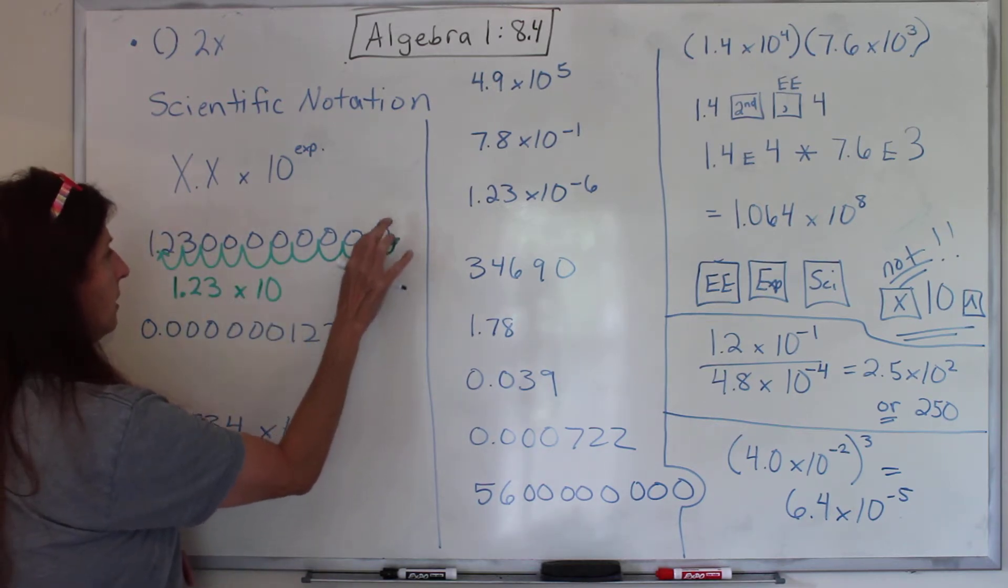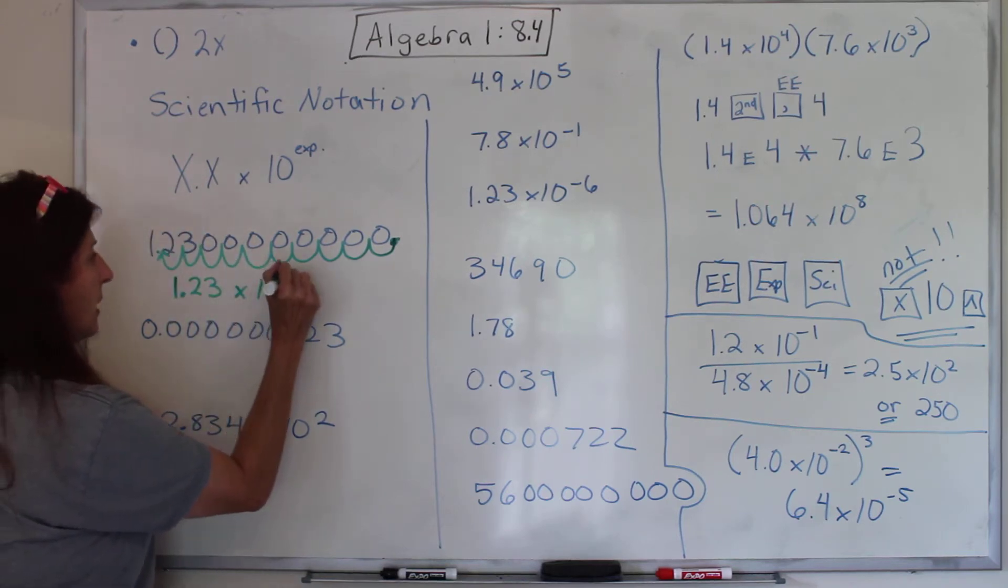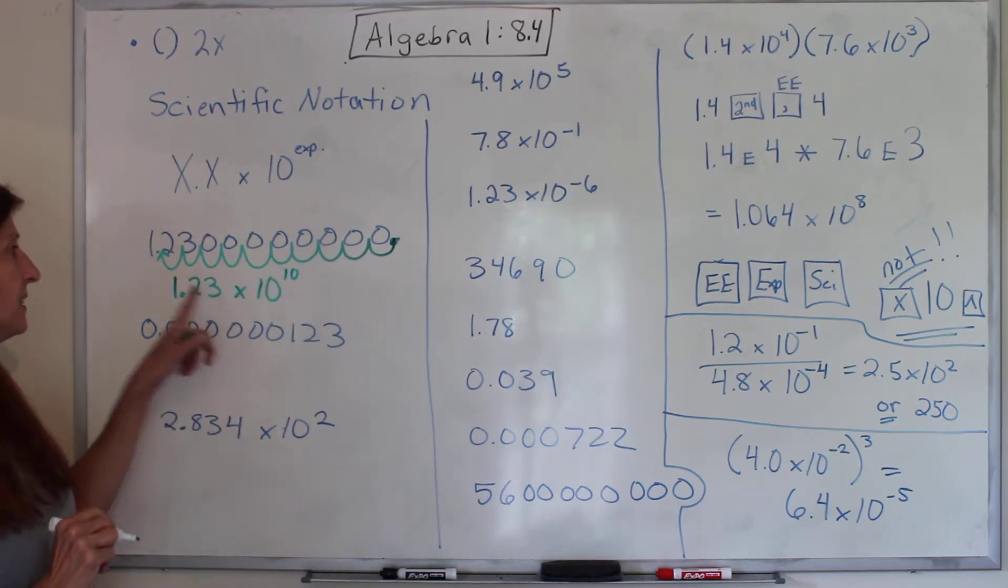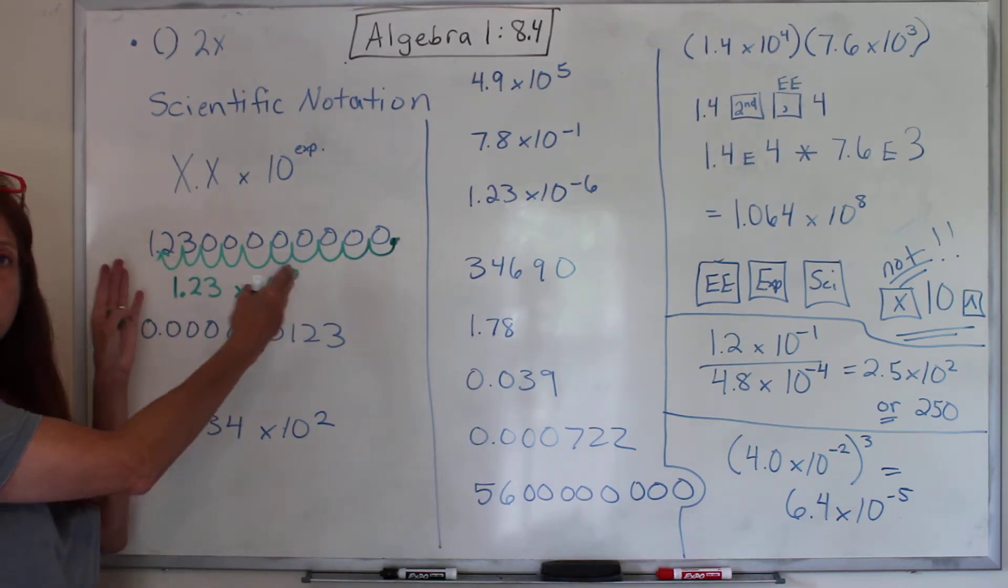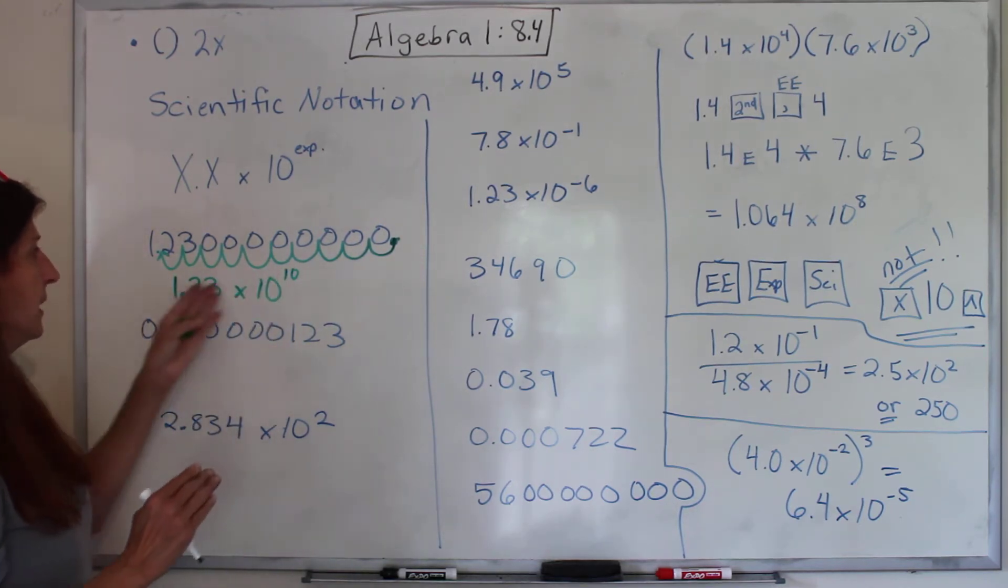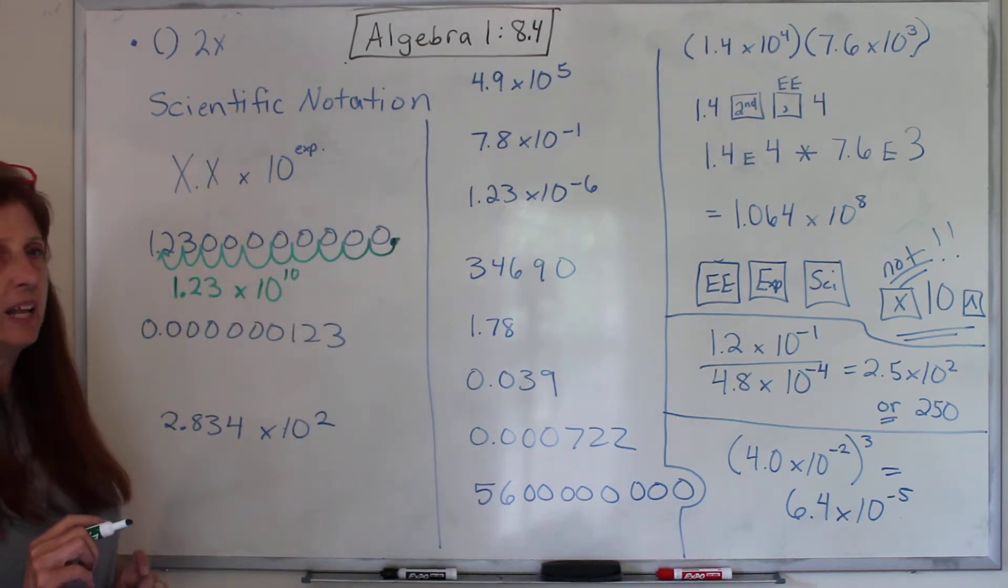All right, now we're going to write this as 1.23, our non-zero numbers here, times 10 by how many hops? 1, 2, 3, 4, 5, 6, 7, 8, 9, 10 hops. Was that right? 1, 2, 3, 4, 5, 6, 7, 8, 9, 10. Yep, 10. I had it in my head. It was only 10. So that is this number written in scientific notation. See how it's smaller? So that's it. And we can tell it to our calculator, which I'm going to teach you how to do in a minute.